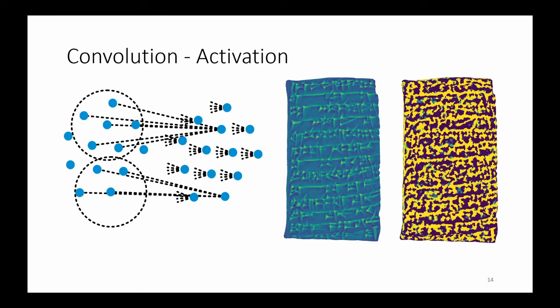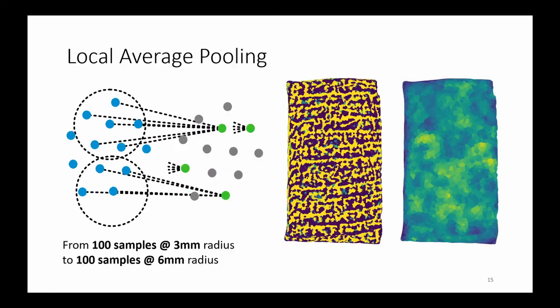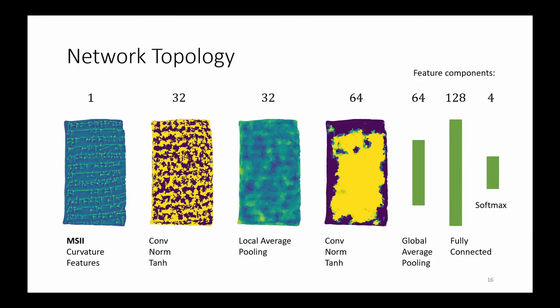We need one additional operation besides convolution for a functioning network: the propagation of activation values. In the convolution step, we propagate activation values from all vertices to all vertices. In the pooling step, we subsample the mesh. Neighborhoods of the sampled vertices are aggregated, averaged, and then propagated to the chosen vertices.